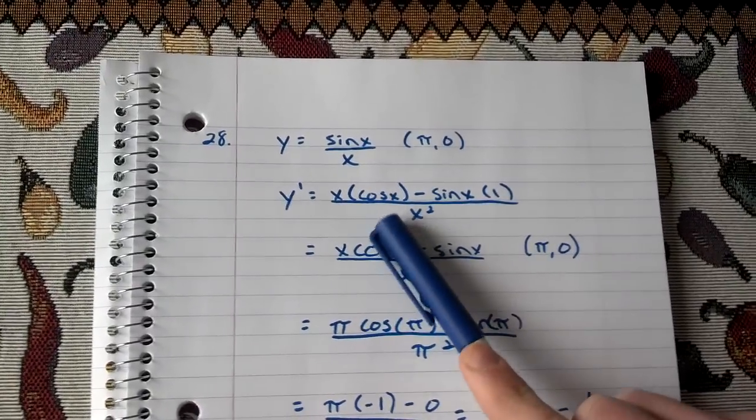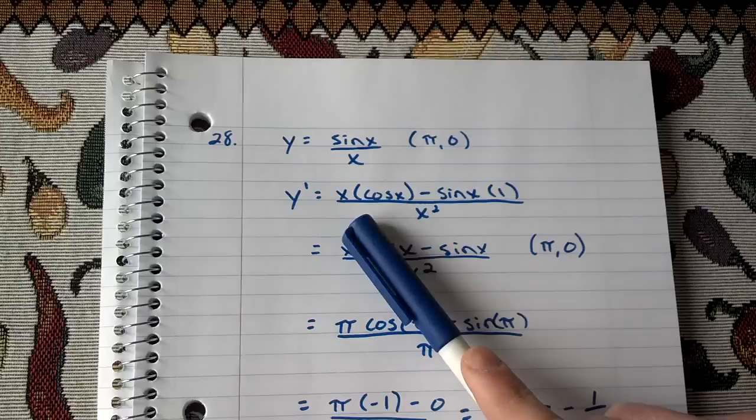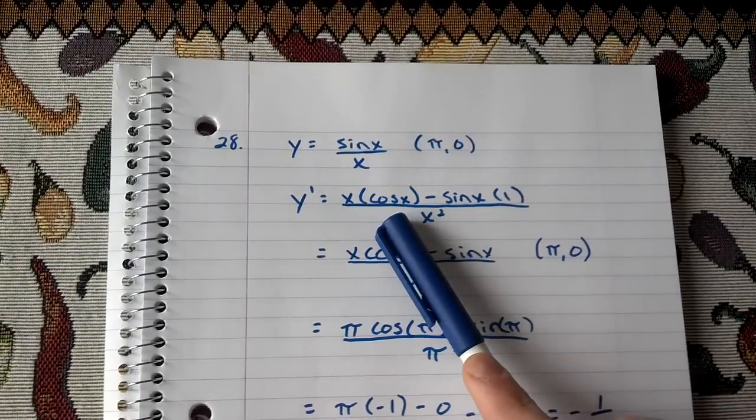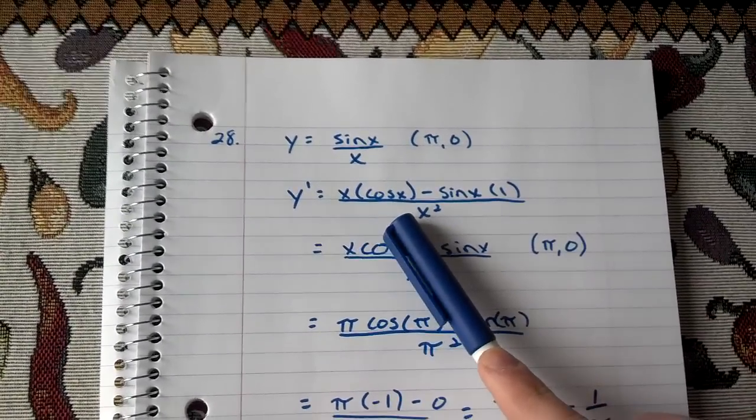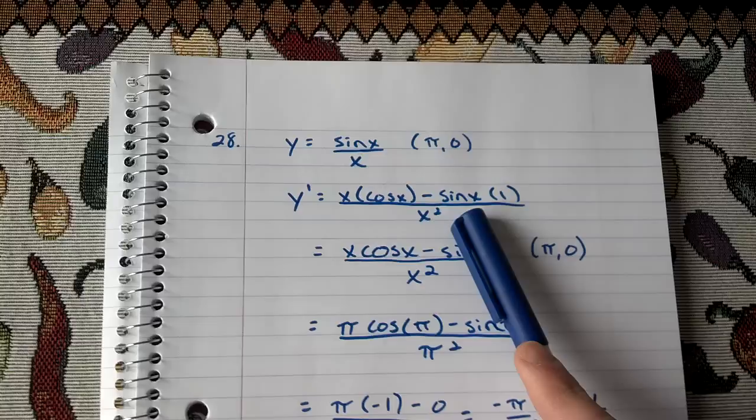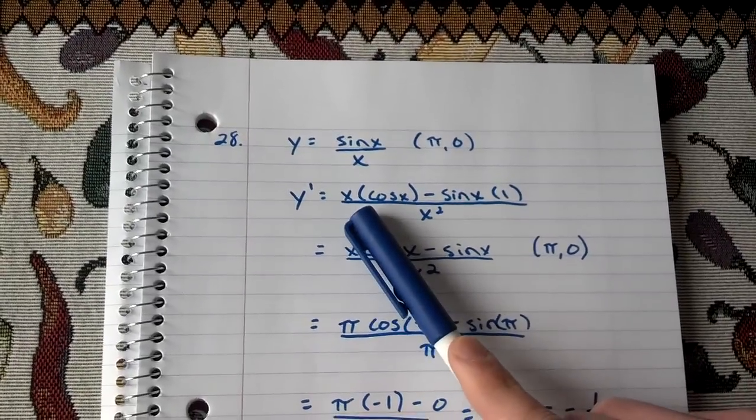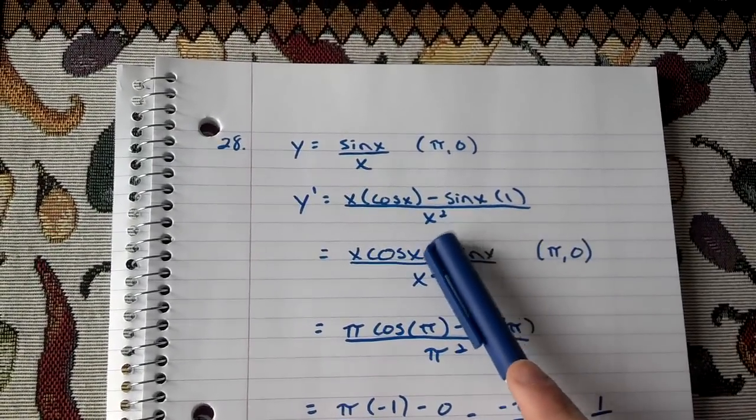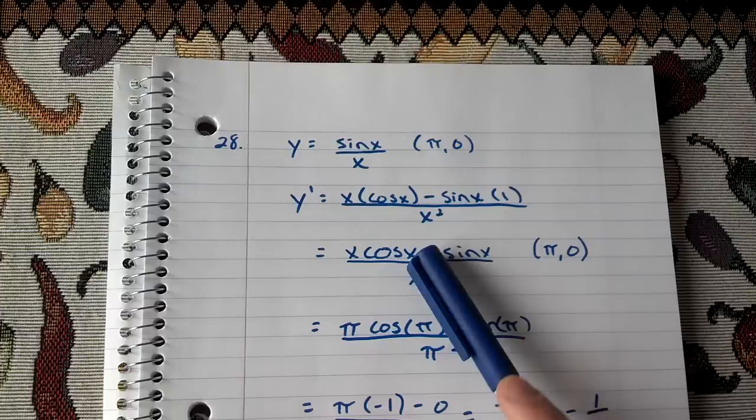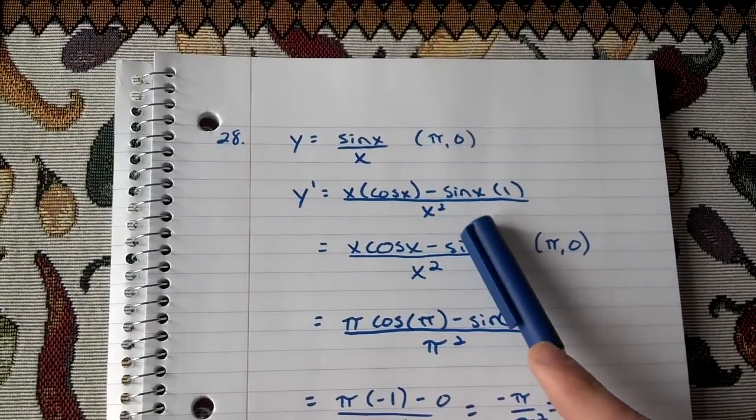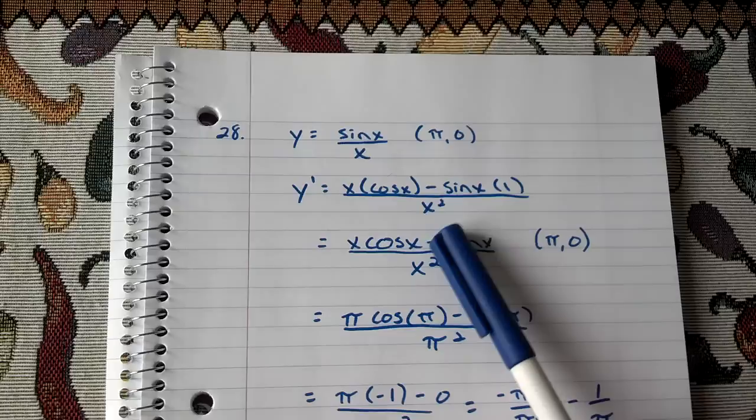You bring the x up to the numerator, so that gives you x, derivative of sine is cosine. So x times cosine x minus sine x, derivative of the x from the denominator gives you 1, and you have to square the denominator. So x cosine x minus sine x multiplied by 1 over x squared.